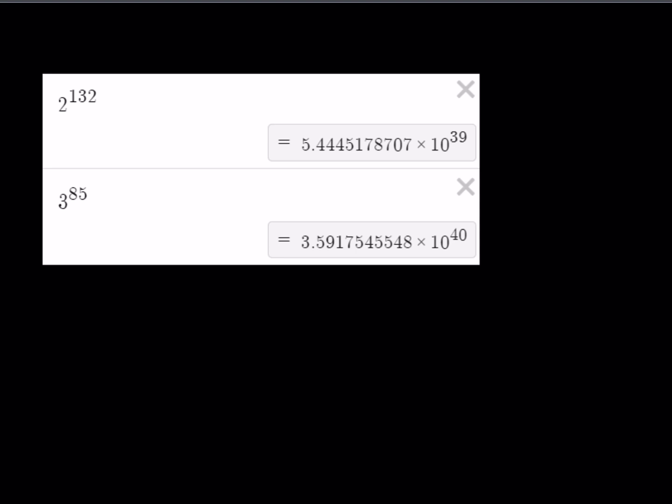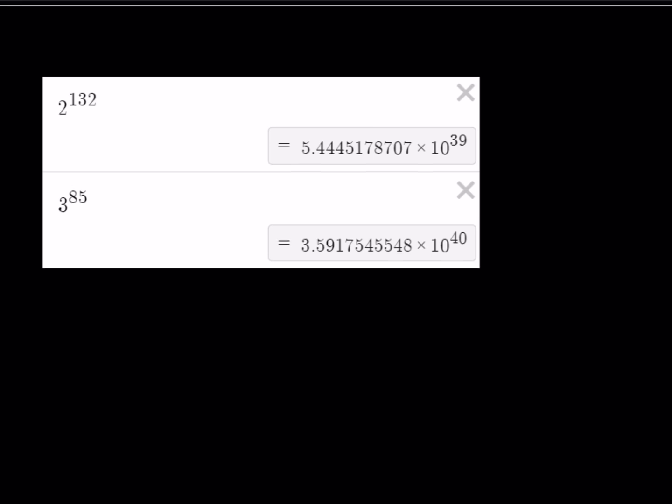So, 2 to the power 132 is approximately 5.44 times 10 to the power 39. As I said earlier, this number has 40 digits and 3 to the power 85 is a 41 digit number which is obviously greater than 2 to the power 132.